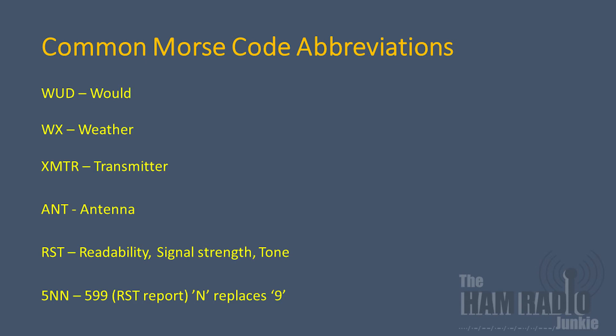It's interesting to note that for RST — your readability, signal strength, and tone — when sent as numbers, sometimes you'll find the number 9 replaced by an N. This is most common during contests, where rubber stamp reports are normally sent as 5-N-N, meaning 5-9-9.